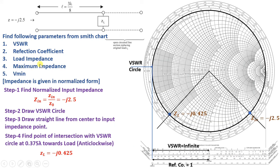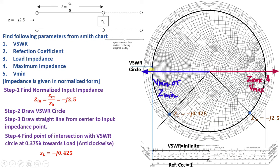For maximum impedance, on the Smith Chart this occurs at the point where the VSWR circle intersects the positive real axis on the right side. At that point, the impedance is infinite, which represents the maximum impedance or Vmax location. The VSWR circle also intersects the real axis on the left side, which gives the Vmin location.